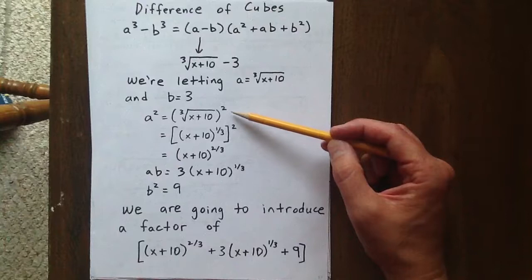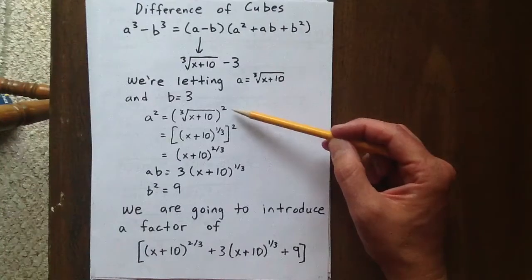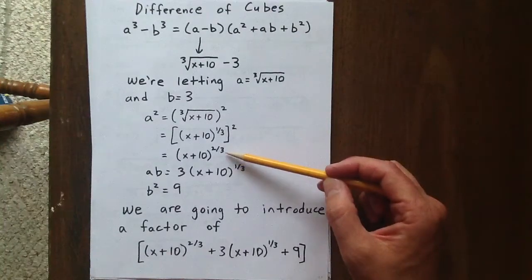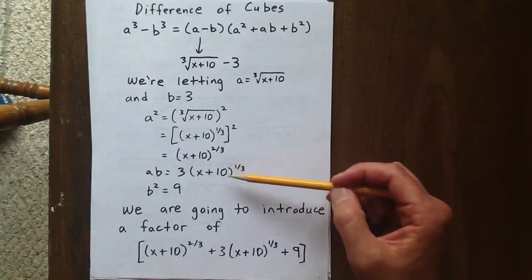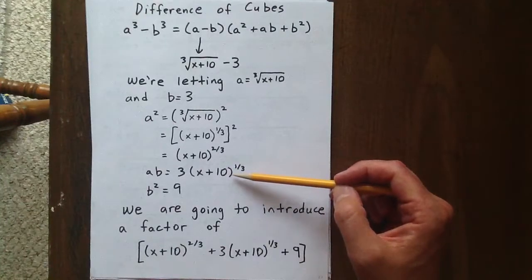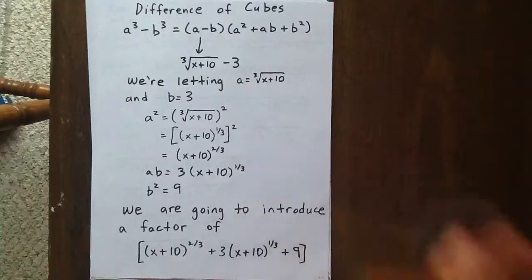That would mean that a squared is the cubed root of x plus 10 quantity squared, which simplifies to x plus 10 to the two-thirds. ab is 3 times x plus 10 to the one-third, and b squared is 9.